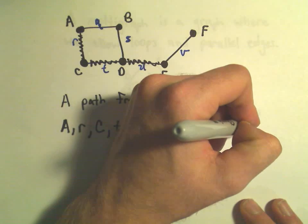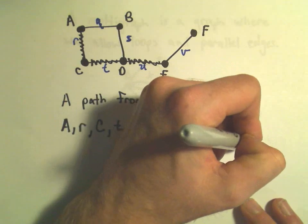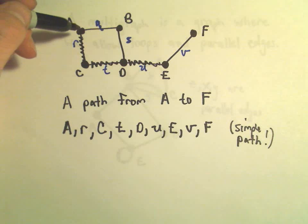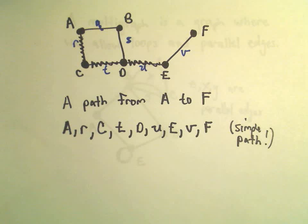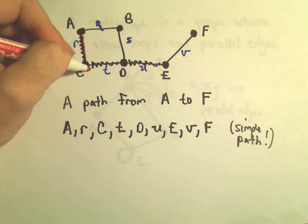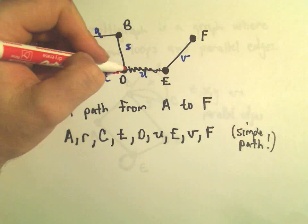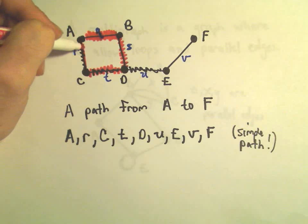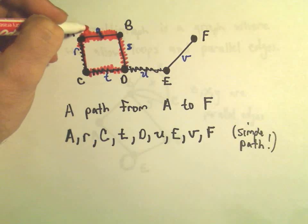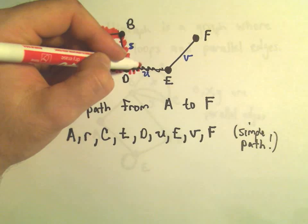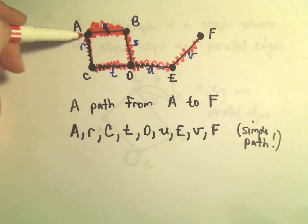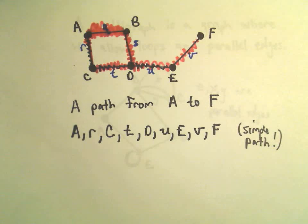This is actually what's known as a simple path. It's called a simple path because we used every edge at most once. The idea is I didn't use any street more than once. I could have went down and over just like I did, but maybe I forgot something, so I decide to walk back to where I started, and then go back along edge Q and down S and then over U and back up to V. That would still be a path from A to F, but it wouldn't be considered a simple path.